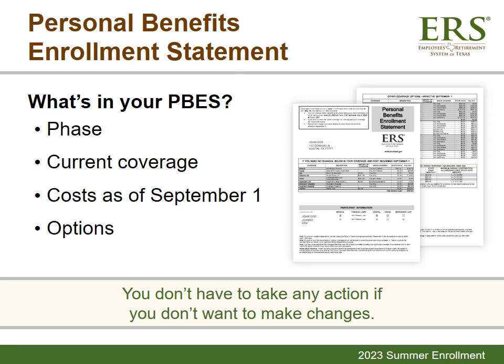Every year before your Summer Enrollment phase, ERS mails you your Personal Benefits Enrollment Statement, or PBES. It is important that you read this document. The front of your PBES details the dates your Summer Enrollment phase starts and ends, coverage you are enrolled in including up to three of your dependents, and monthly cost of your current coverage effective September 1st. If you have more than three dependents enrolled and don't see them on your PBES, you can log into your ERS online account to verify their coverage. The other pages of your PBES will provide you with all of the options available to you. You can log into your ERS online account, or ask your Benefits Coordinator to make changes on your behalf.